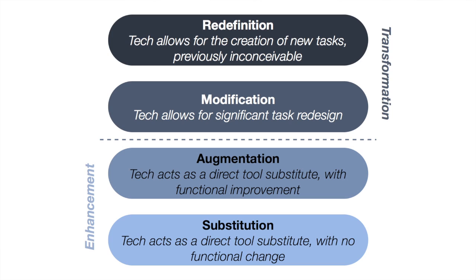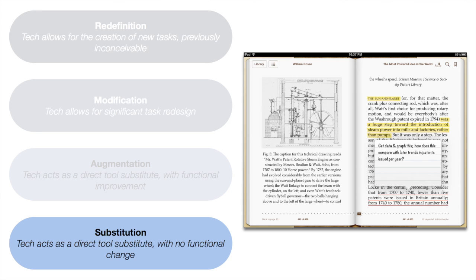The SAMR model links how you use a technology to the outcomes for students. If you use a technology at what is called the substitution level — so that you're essentially using it to replace an older technology and doing exactly the same sort of things you were doing before — this may be useful. It may set the stage for future developments, but it will not in any way, shape, or form significantly impact student outcomes.